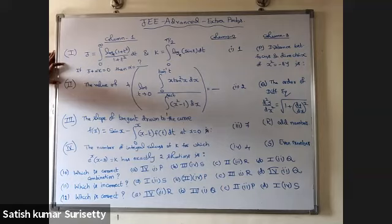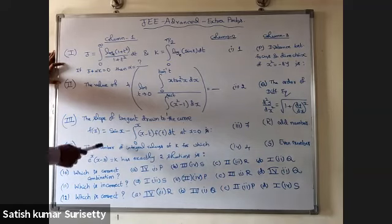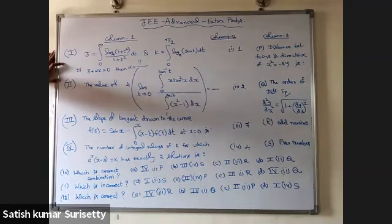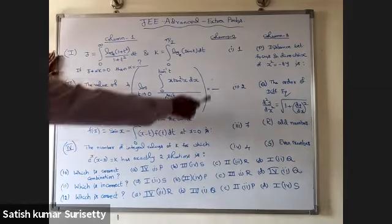Column I continued: (iii) The slope of the tangent drawn to the curve f(x) = sin x − ∫₀^x (x−t)f(t) dt at x = 0. (iv) The number of integral values of k for which eˣ(x−3) = k has exactly two solutions.